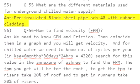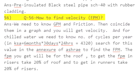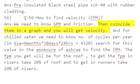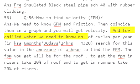Q56: How to find velocity in FPM? Answer: We need to know GPM and friction, then coincide them on a graph and you will get the velocity. For chilled water, we need to know the flow parameters.